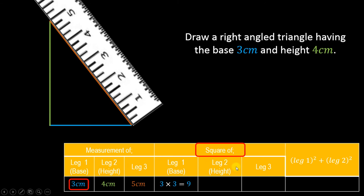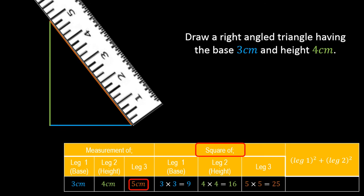Similarly, we have to square the second leg, which is the height. It was 4 cm, and when you square 4 cm the answer is 16, because four times four equals 16. Similarly for the third leg, which is 5 cm — squaring it gives 25.